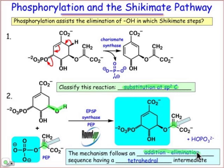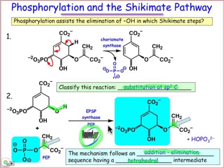You should by now be used to thinking about substitution at sp2 centers as taking place by this mechanism. There will be a key tetrahedral intermediate that gets involved. It's all catalyzed by EPSP synthase — enolpyruvate shikimate phosphate synthase. This is the step where the inhibitor in Roundup gets involved and basically blocks this addition-elimination mechanism from taking place.